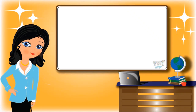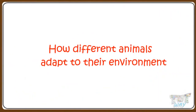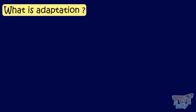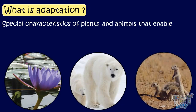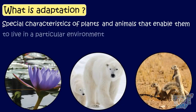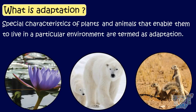Hi kids! Today we will learn how different animals adapt to their environment. Let's start! Kids, let's first see, what is adaptation? Special characteristics of plants and animals that enable them to live in a particular environment are termed as adaptation. There are various types of adaptations. Let's learn about a few of them.